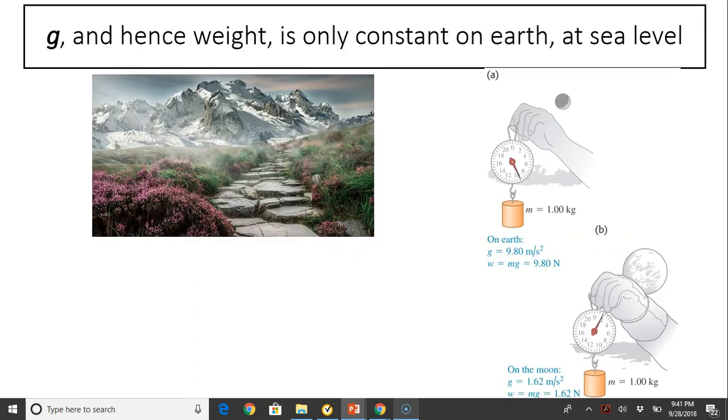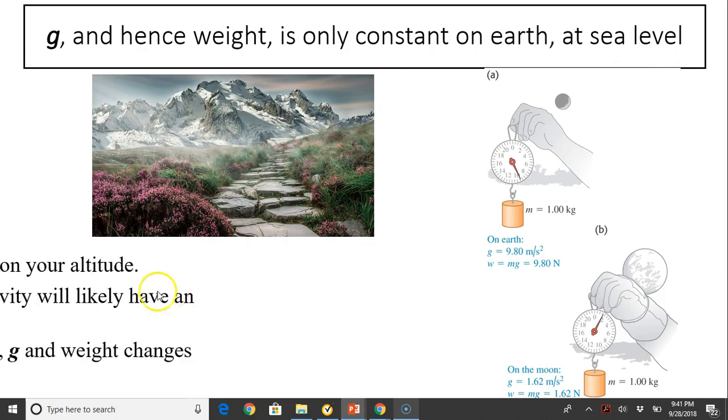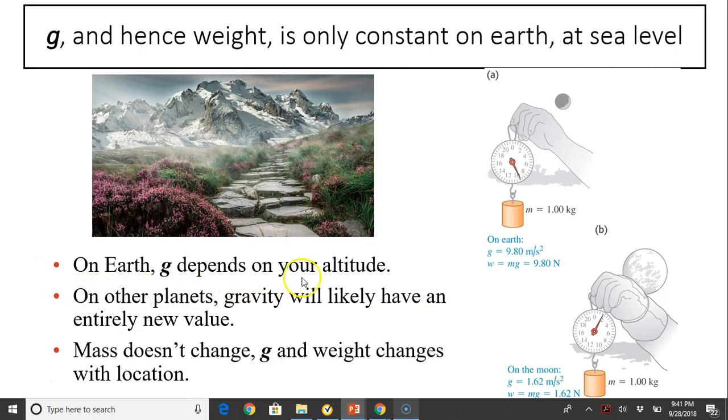g and hence weight is only constant on Earth at sea level. So g actually varies with location. Look at over here. Even on Earth at sea level, on the top of the mountain g is a little bit different than in the valley. So on Earth, g depends on your altitude. On other planets, gravity will likely have an entirely new value, such as on Mars and on Earth, you weigh differently.